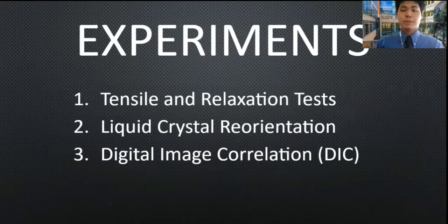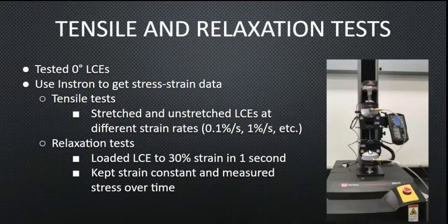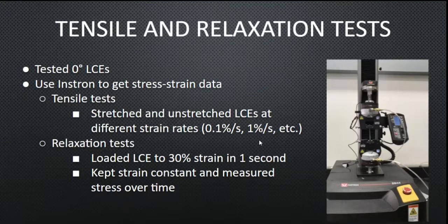We ran three different experiments: the first being a tensile relaxation test, the second being liquid crystal reorientation, and lastly digital image correlation. For the tensile relaxation test, we used zero-degree LCEs and a machine called an INSTRON to analyze them. There are two clamps where we put an LCE in between. The INSTRON stretches the LCE and measures the force — analogous to stress — required to stretch the LCE to some displacement, analogous to strain, producing a stress-strain curve. We stretched and un-stretched LCEs at different strain rates for a tensile test. For the relaxation test, we stretched the LCE to 30% strain, then kept that constant and measured the stress over time.